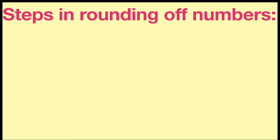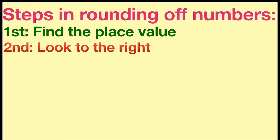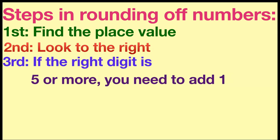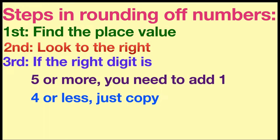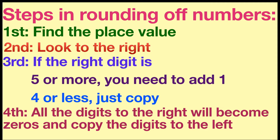In rounding of numbers, we have four steps to follow. The first step is find the place value. Second, look to the right. Third, if the right digit is five or more, you need to add one. But if it is four or less, just copy. Lastly, all the digits to the right will become zeros and copy the digits to the left.